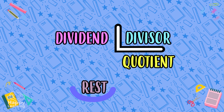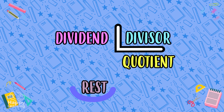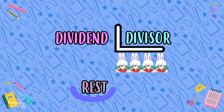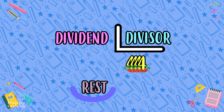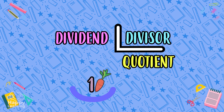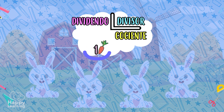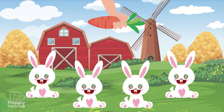The divisor is the part by which the dividend will be distributed — since there are four rabbits, the number four is the divisor. The quotient is the amount each part gets — if each rabbit gets four carrots, the quotient is four. The remainder refers to the amount left over — in this case, one carrot is left, which we will keep for the next day.